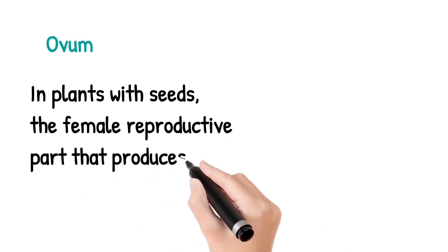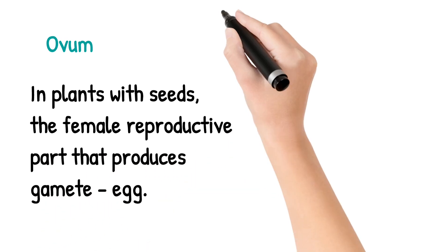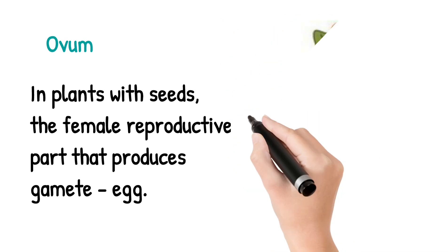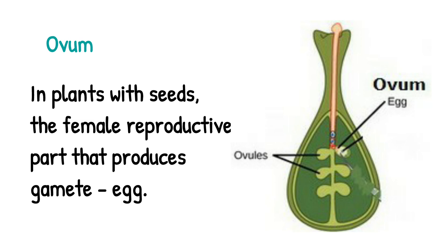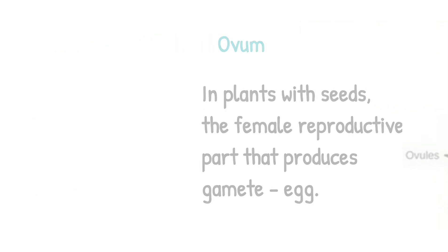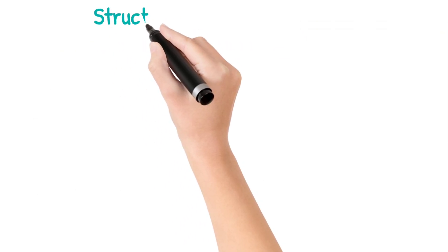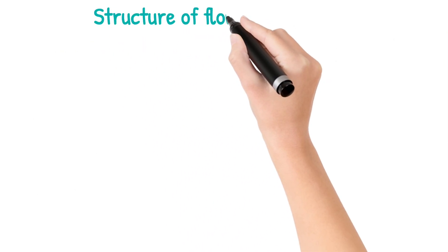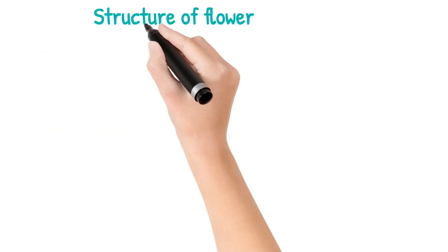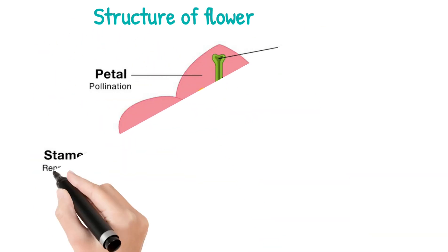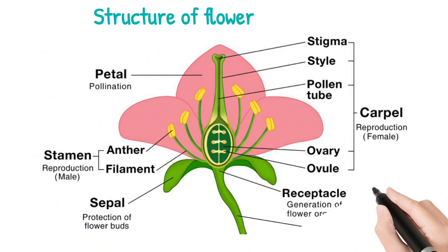Next we move on to the ovule. In plants with seeds, the female reproductive part that produces gametes or eggs is called the ovule. You can see the picture — the ovule is situated inside the ovary.